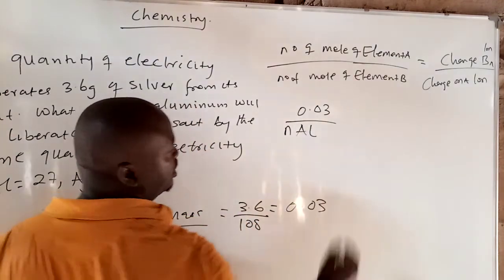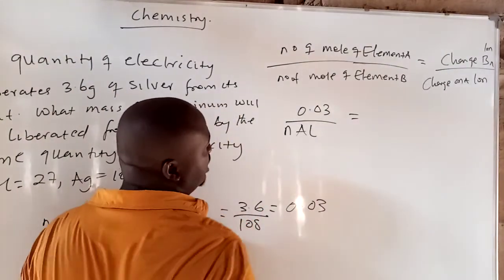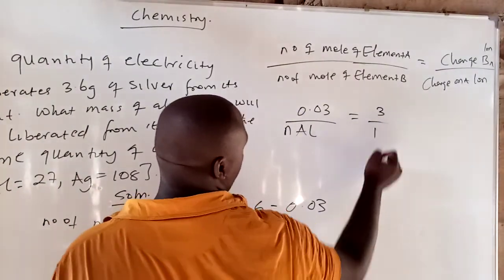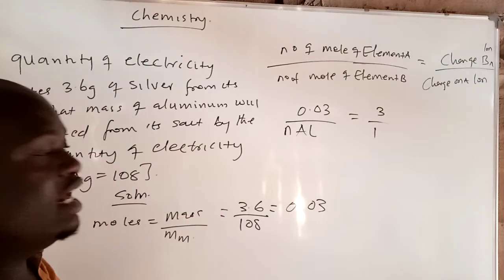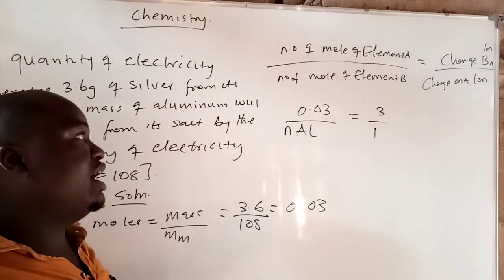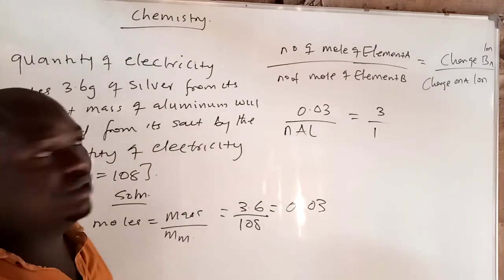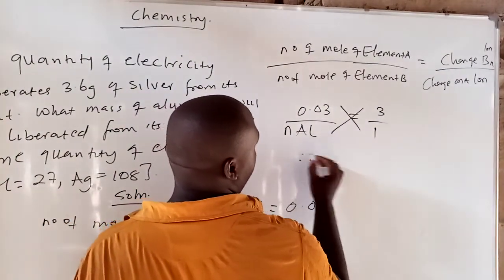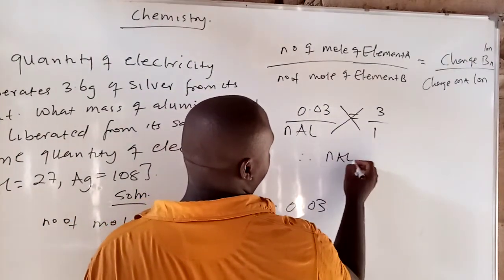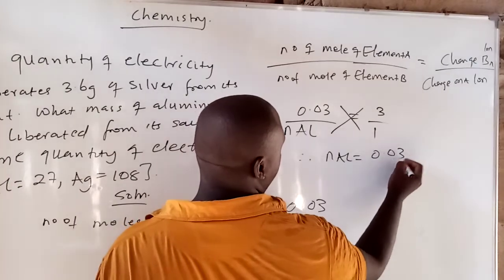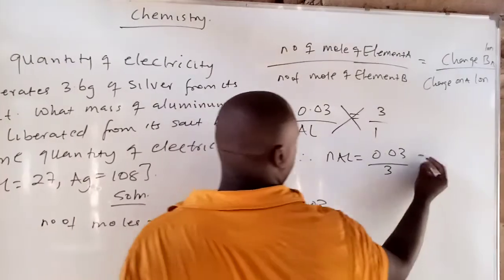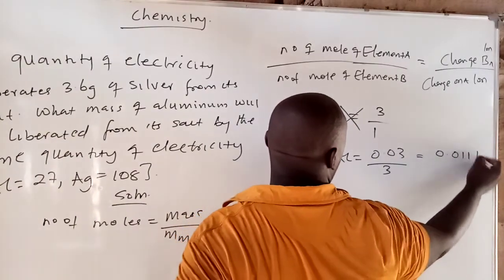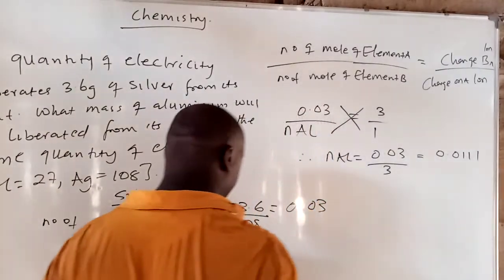The charge on aluminium is 3, while the charge on silver is 1. Remember, element A is silver and element B is aluminium. So all you need to do is cross-multiply. Therefore, the number of moles of aluminium is 0.03 divided by 3, which gives 0.0111 moles of aluminium.